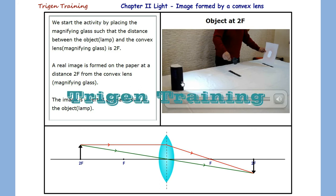The object was placed at a distance of 2F from the lens and the image was formed at a distance 2F from the lens, inverted and the same size as the object.